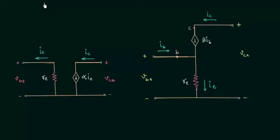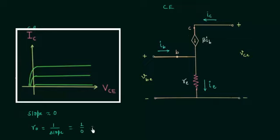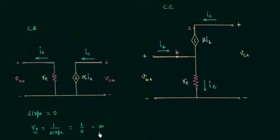In the last lecture we obtained the RE model for common base transistor and for common emitter transistor. In case of common base transistor, if you see the output characteristics, you will find the slope of the curve is nearly equal to zero. We already know the output resistance is equal to one by slope, which gives one by zero, equal to infinity. So the output resistance is infinity in the common base case, and because of this we can neglect the output resistance in the RE model of common base transistor.